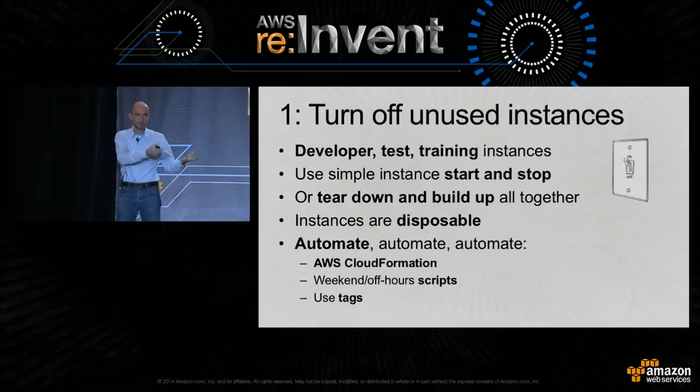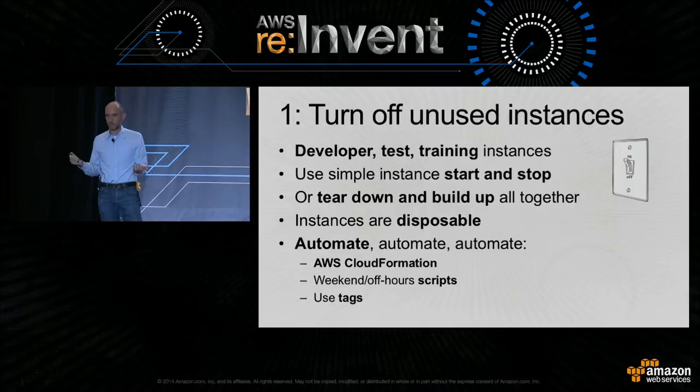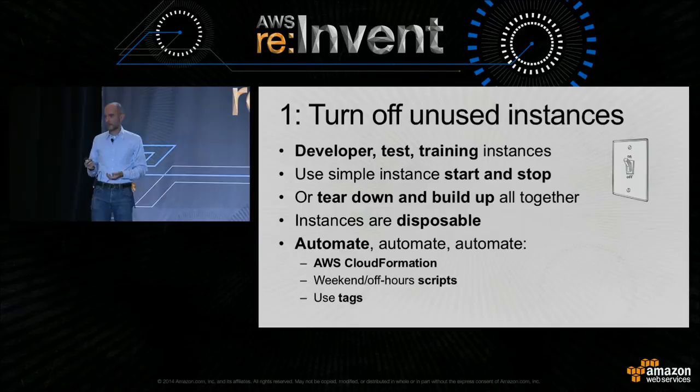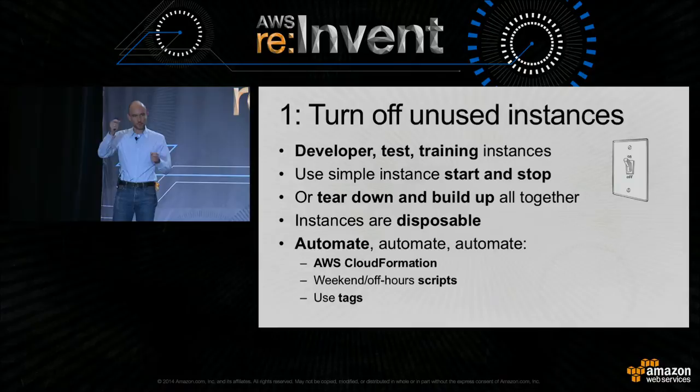There is no longer the notion of buying hardware and being stuck with it. Think of instances as something disposable — get rid of them as soon as you don't need them. Automation is key here. You can leverage AWS CloudFormation or other automation techniques to make turning off unused instances automatic.